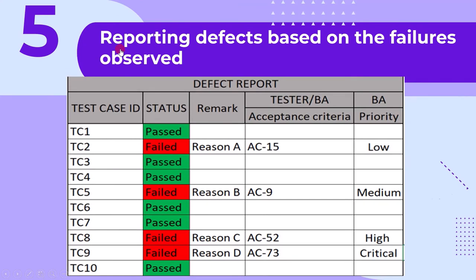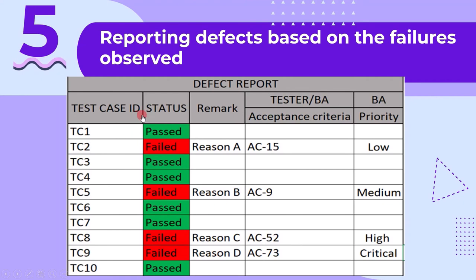The fifth main activity is reporting defects based on the failures observed. In the test execution stage, we prepare the defect report. For example: list of test cases failed, reason for failure, which requirement failed, and impact of the failure. Information on the defect report varies from project to project, but the fifth main activity is reporting defects based on the failures observed.